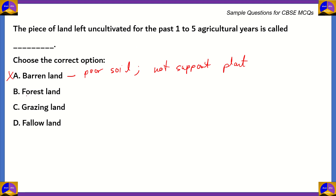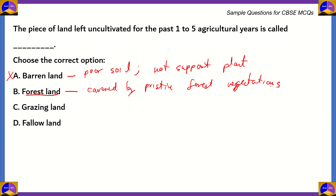What about option B, forest land? Forest land is basically areas which are covered by pristine forest vegetation. These are areas with extreme biodiversity and therefore they are not to be touched, because if you do that, you risk the loss of biodiversity. Option B is also incorrect — they are left uncultivated forever because they are a biodiversity hotspot and it is best left conserved.